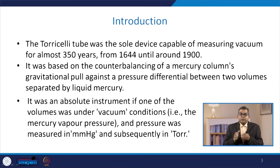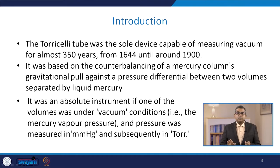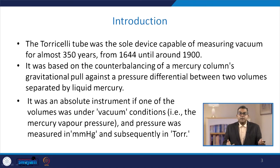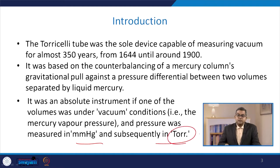The Torricelli tube was the sole device capable of measuring vacuum for almost 350 years, from 1644 until around 1900. It was based on counterbalancing mercury column gravitational pull against a pressure differential between two volumes separated by liquid mercury. It was an absolute instrument if one of the volumes was under vacuum condition — that is the mercury vapour pressure — and pressure was measured in mm of Hg and subsequently in torr.